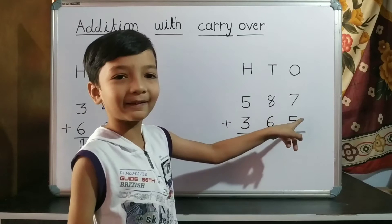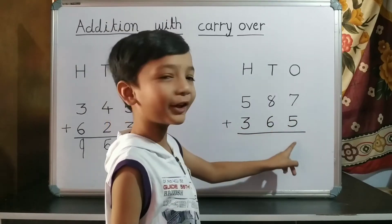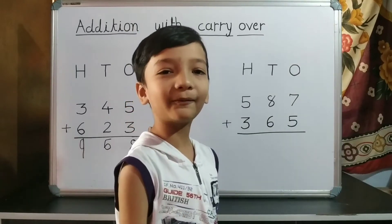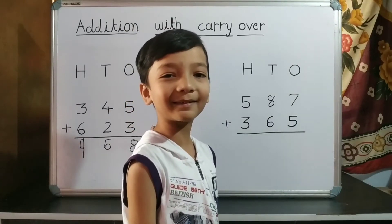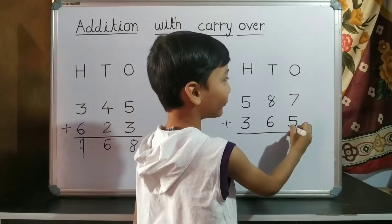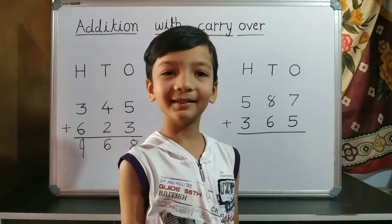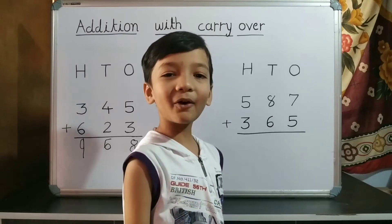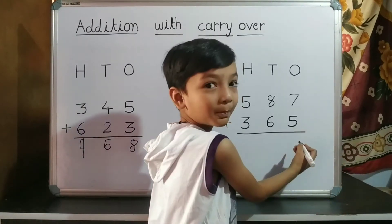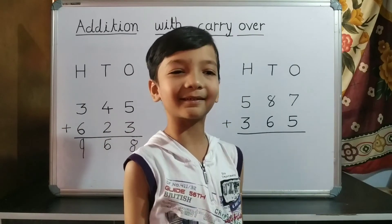587 plus 365. First we do addition of one's place. 7 plus 5 is 12. So we write 2 on one's place and 1 carryover to ten's place.